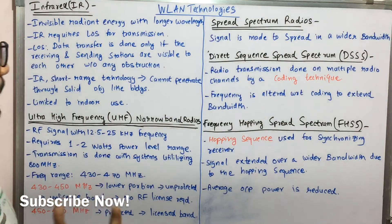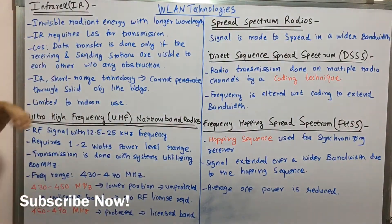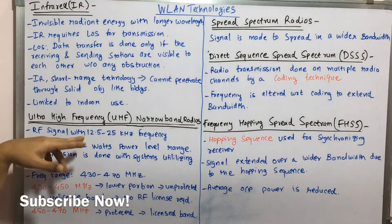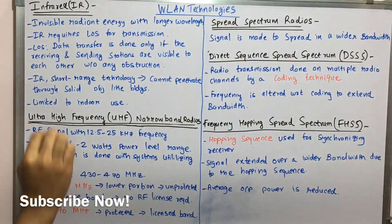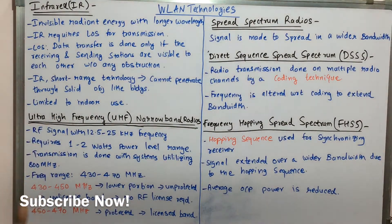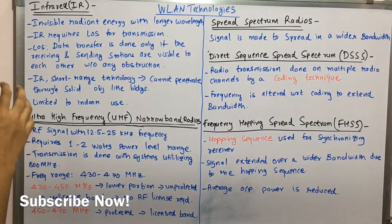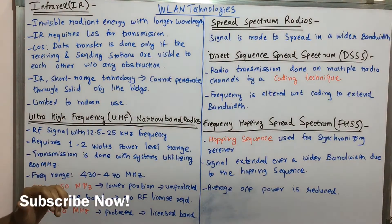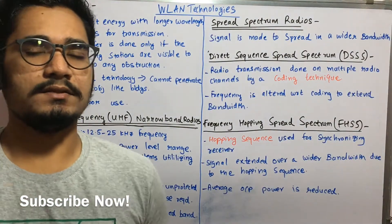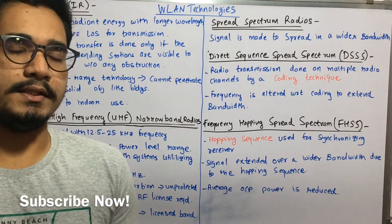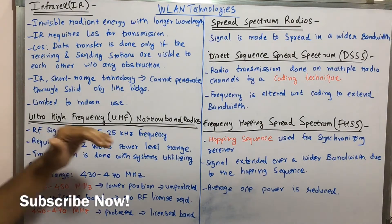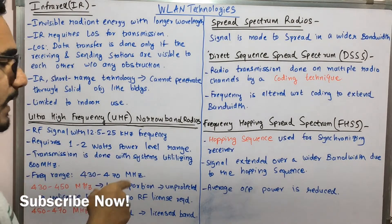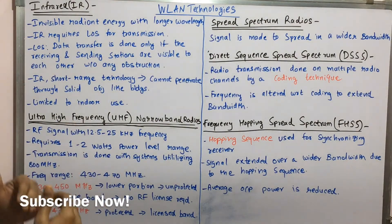IR is limited to indoor use, operating within enclosed systems like a laboratory. Next, we have the Ultra High Frequency, UHF, also called narrow band radio. These are radio frequency signals with frequency ranges of 12.5 to 25 kilohertz, requiring one to two watts for power level range. Transmission is done with systems utilizing 800 megahertz, and devices with frequencies near 800 megahertz can only transmit with UHF.